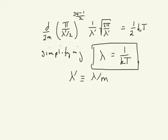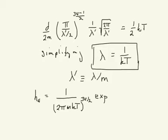So the final expression for the function hn can now be written using lambda, and we get the expected result of this Maxwell-Boltzmann distribution and velocities.